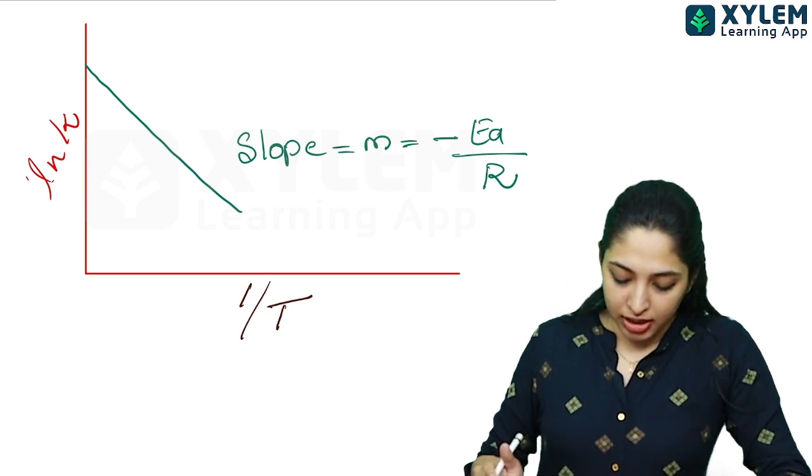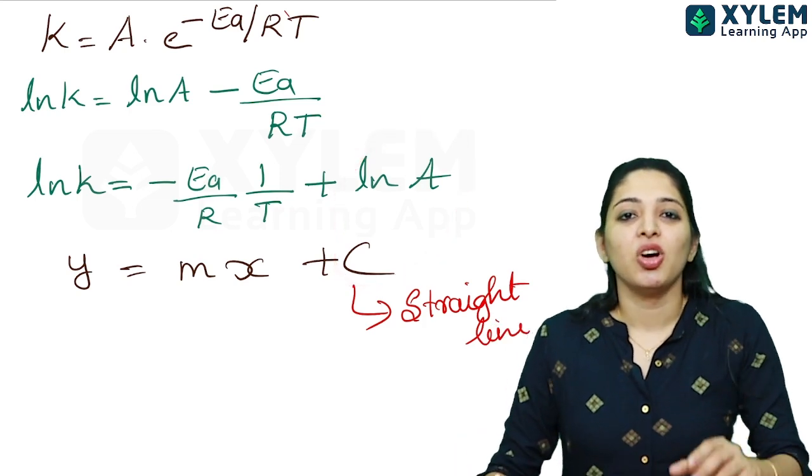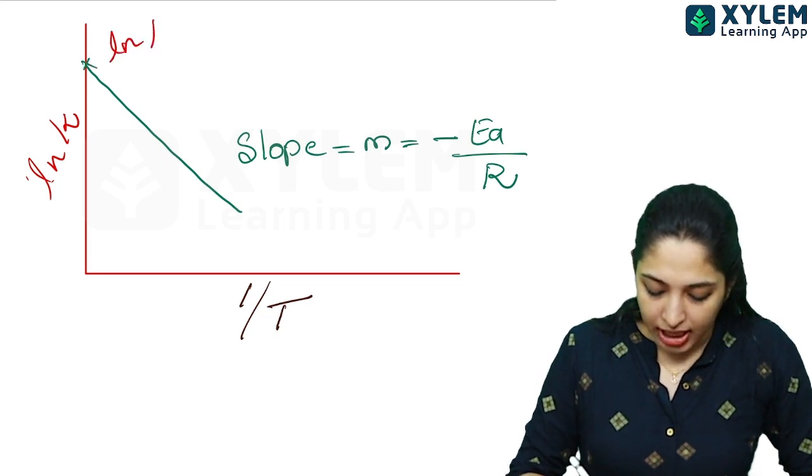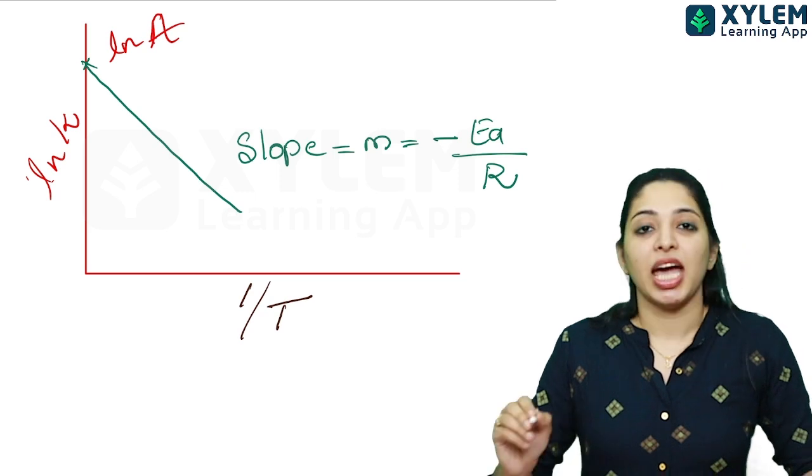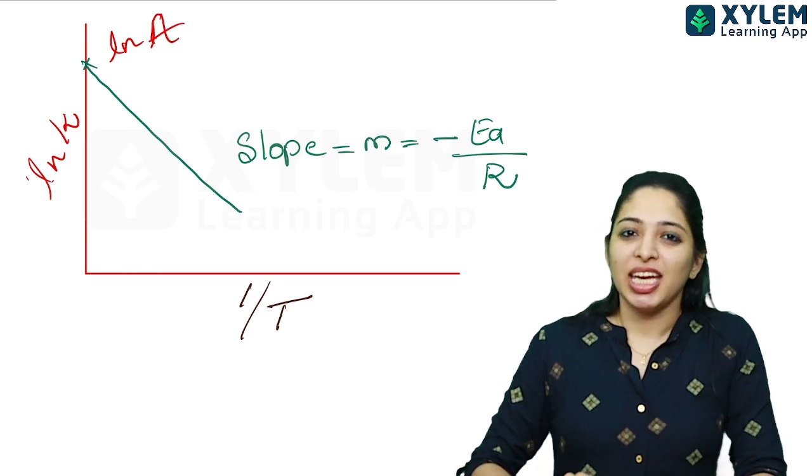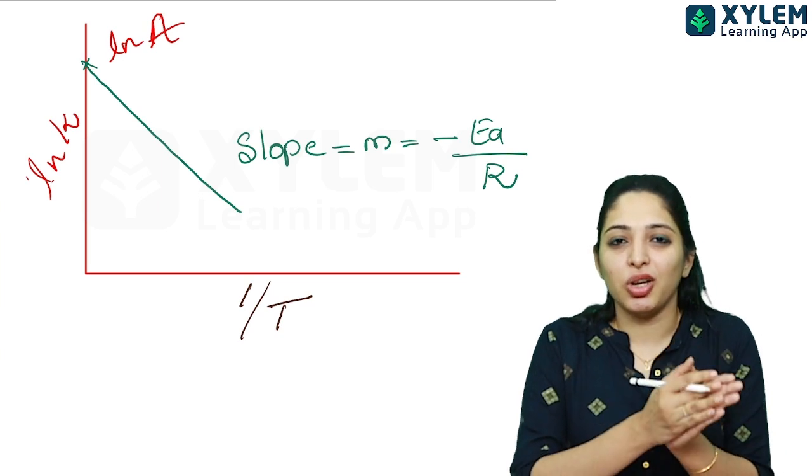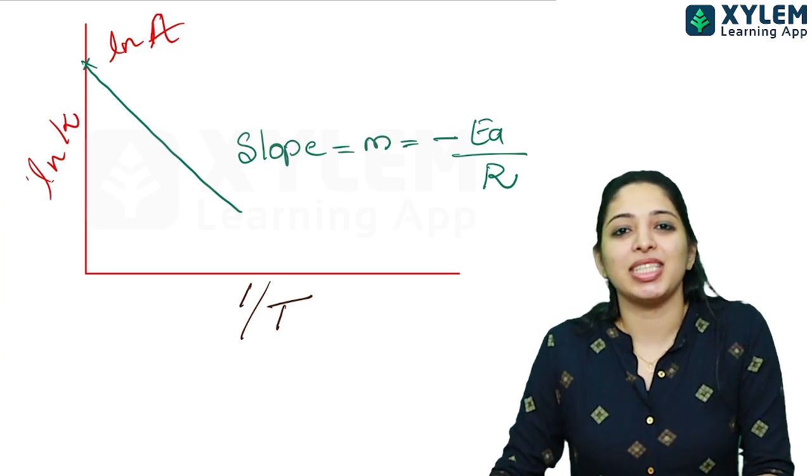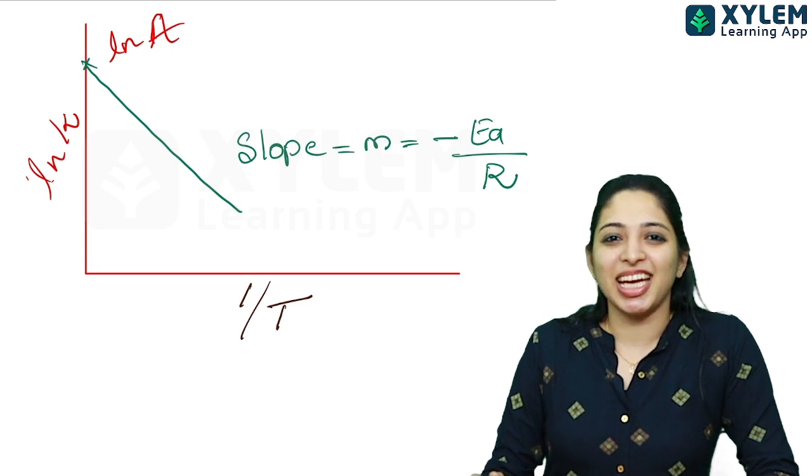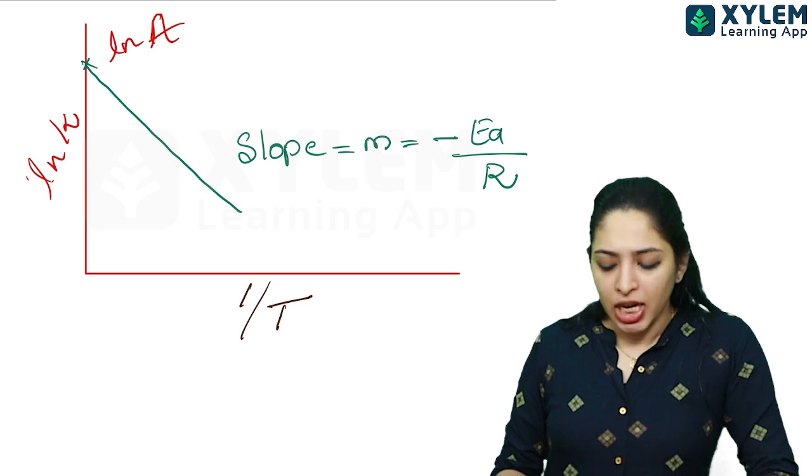The y intercept is C, which is log A. This is the basic graph. Straight line, negative slope, y intercept log A, slope minus Ea by R. This graph is very easy to understand and often shown in exams.